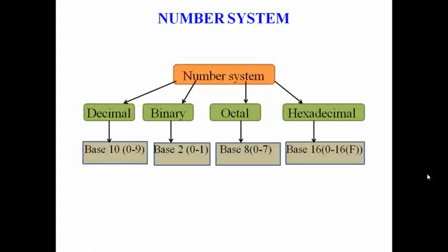The hexadecimal number system is also called a base-16 number system. That's why we use 16 symbols or digits in the hexadecimal system — that is, 0 to 9 digits and A to F characters.